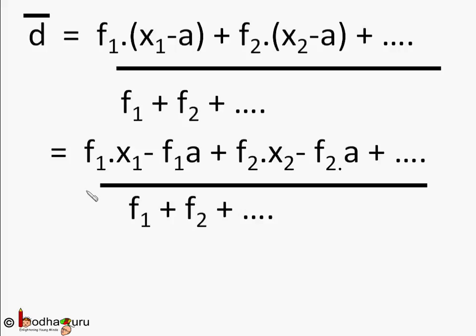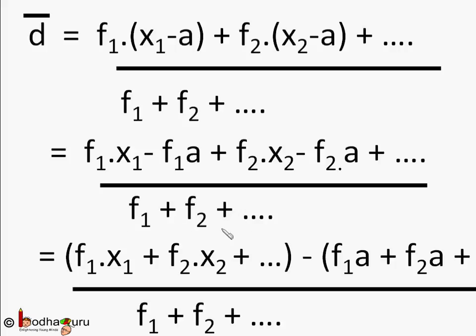So numerator f1 into x1 minus A plus f2 into x2 minus A and so on will become f1 x1 minus f1 A plus f2 x2 minus f2 A and so on. On rearranging the terms, that is taking all x terms together and terms with A together, the numerator will look like f1 x1 plus f2 x2 plus f3 x3 and so on minus f1 A plus f2 A plus f3 A and so on, divided by f1 plus f2 plus f3.